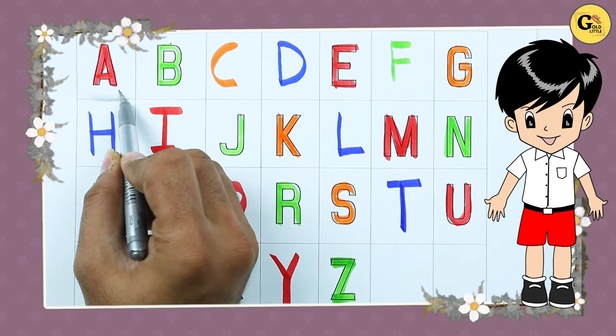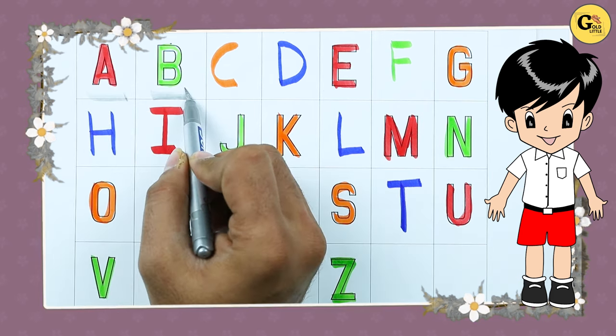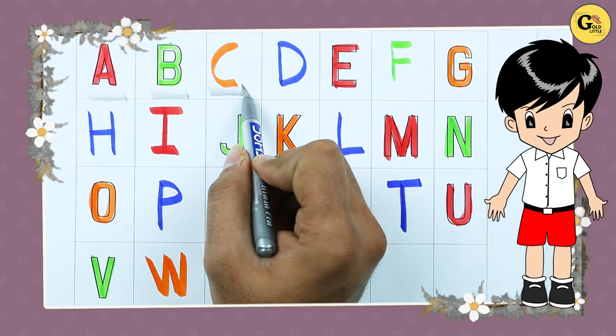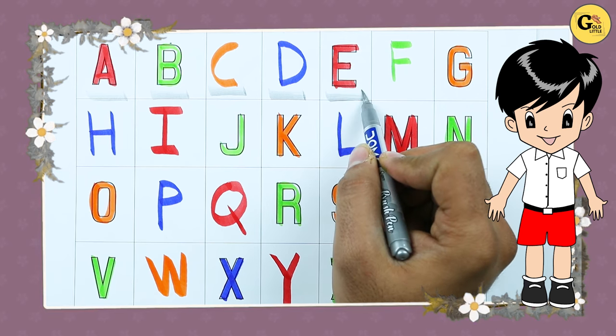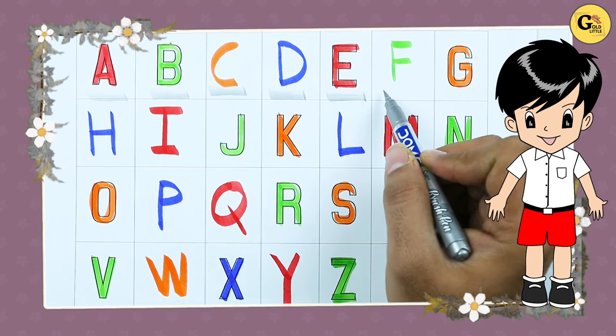A. A for apple. B. B for ball. C. C for cat. D. D for dog. E. E for elephant.